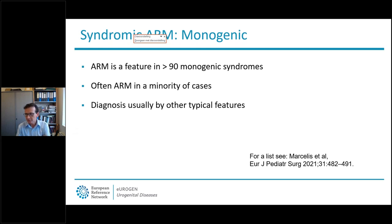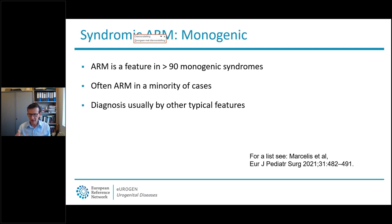A second group of syndromic ARM are the monogenic syndromes, meaning these syndromes are caused by mutations in single genes. There are many monogenic syndromes with ARM as a feature. A search in Phenomizer — a tool using Human Phenotype Ontology search terms — revealed more than 90 syndromes that hold ARM as one of their features. In most of these, ARM is found in only a minority of cases and the diagnosis is usually made by other typical features, but there are some syndromes where ARM is one of the major signs.